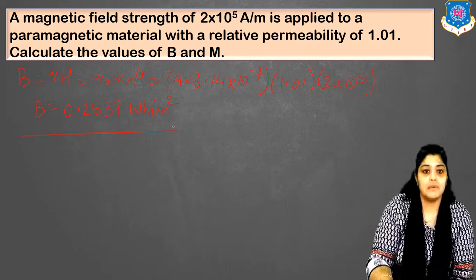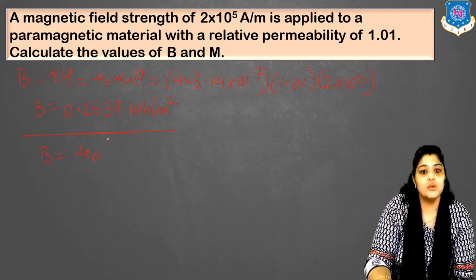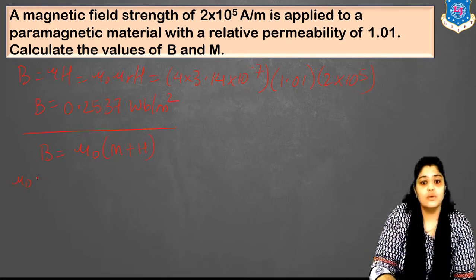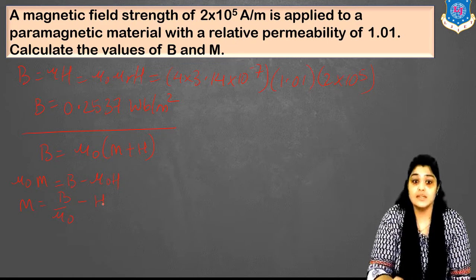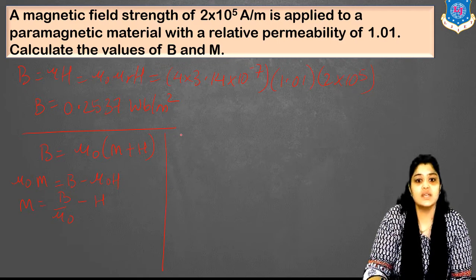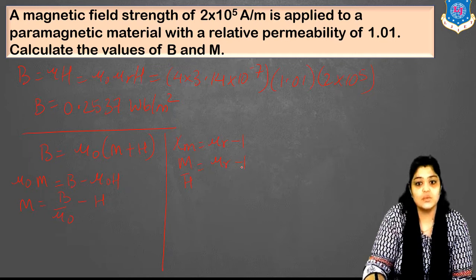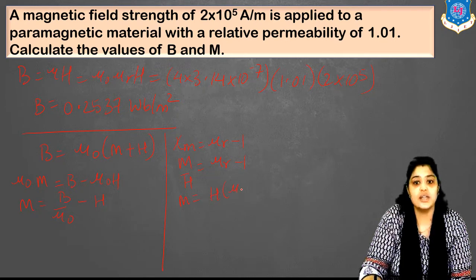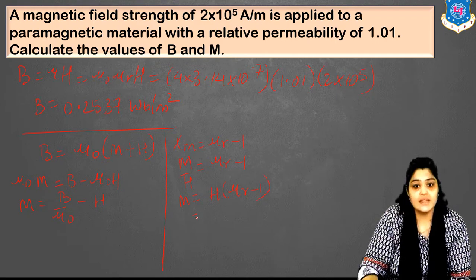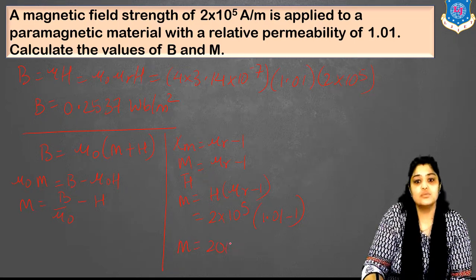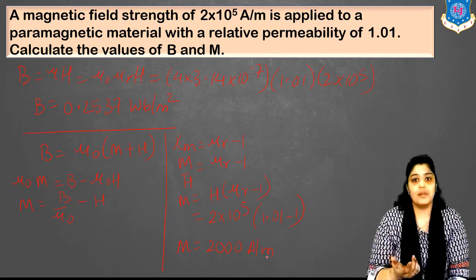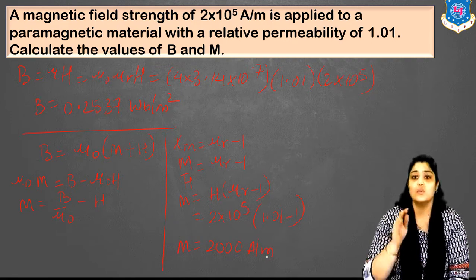Now let's find M. From B equals mu_0 into (M plus H), we get M equals B upon mu_0 minus H. Alternatively, using chi_m equals mu_r minus 1, we get M equals H into (mu_r minus 1). So M equals 2 into 10 raised to 5 multiplied by (1.01 minus 1), giving M equals 2000 ampere per meter. There are two formulae; you can use whichever you remember well.